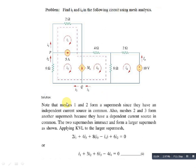Mesh 1 and 2 form a super mesh since they share an independent current source in common. Also, mesh 2 and 3 form another super mesh because they have a dependent current source in common. The two super meshes intersect and form a large super mesh as shown in the figure. Applying KVL to the large super mesh gives us equation number 1.